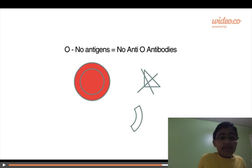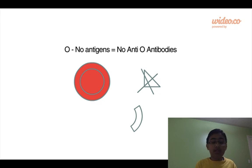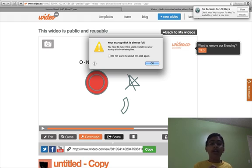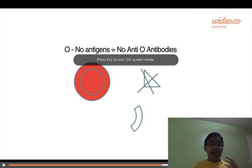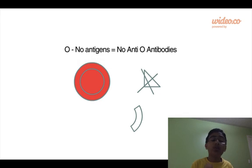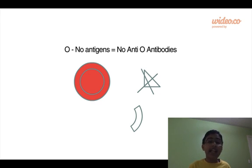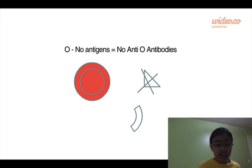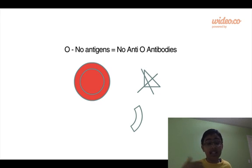O has no antigens on its surface, so there cannot be any anti-O antibodies, meaning O can give to anyone. However, O is not in contact during birth with any other antigen, so it develops antibodies against both the A and B antigens. So if an O blood group person is donated blood of any other type — because A, B is a mix of A and B — and O has antibodies against both A and B, it's going to cause an allergic reaction, therefore killing you.